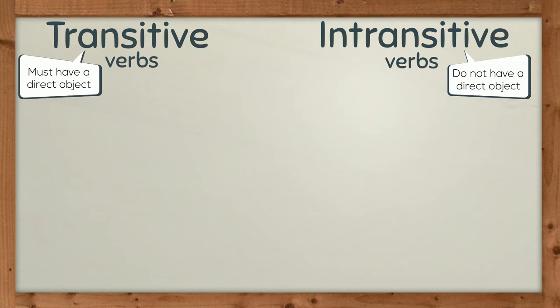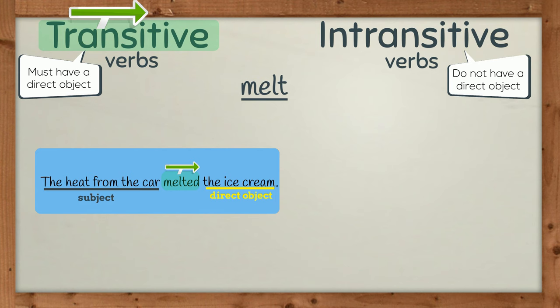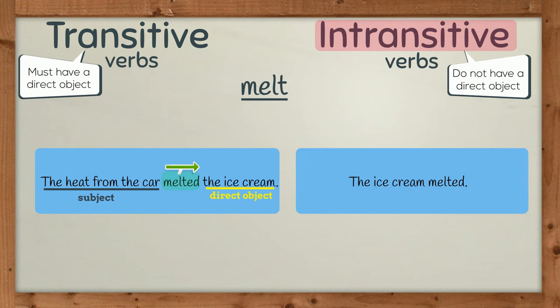Some verbs can be transitive or intransitive depending on their use. Take the verb melt from a sentence earlier in the lesson. The heat from the car melted the ice cream. Here, the verb melted is transitive because the action is moving from the subject to the direct object, the ice cream. The verb melted becomes intransitive in the following sentence: the ice cream melted.